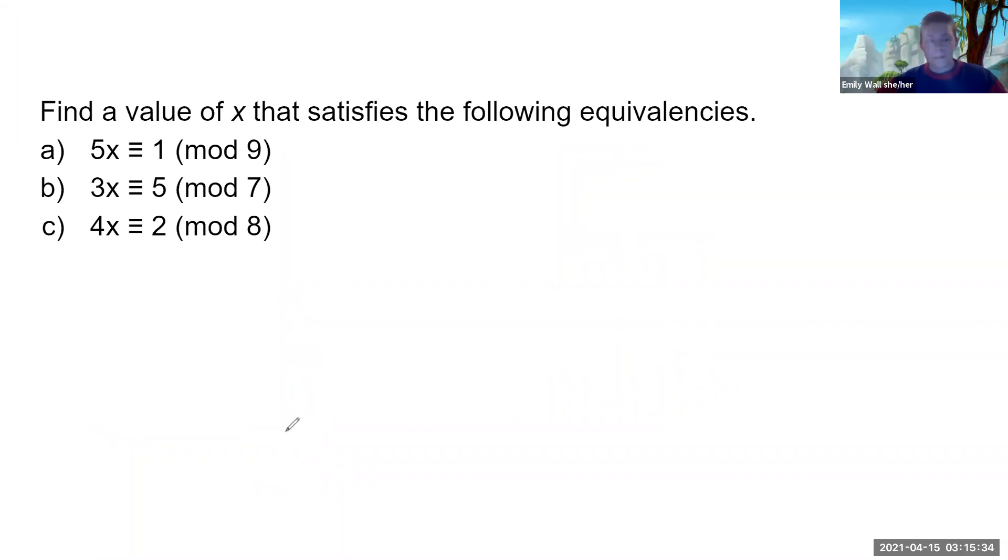Looking at part b, the x in part b will not be 3's inverse because we need x times 3 to be equivalent to 5. So this is different than part a, but we will still use the inverse. Or maybe you just looked at this problem and tried different x's until you got something that was equivalent to 5. That also works, but in the spirit of this problem, I'm going to find the inverse.